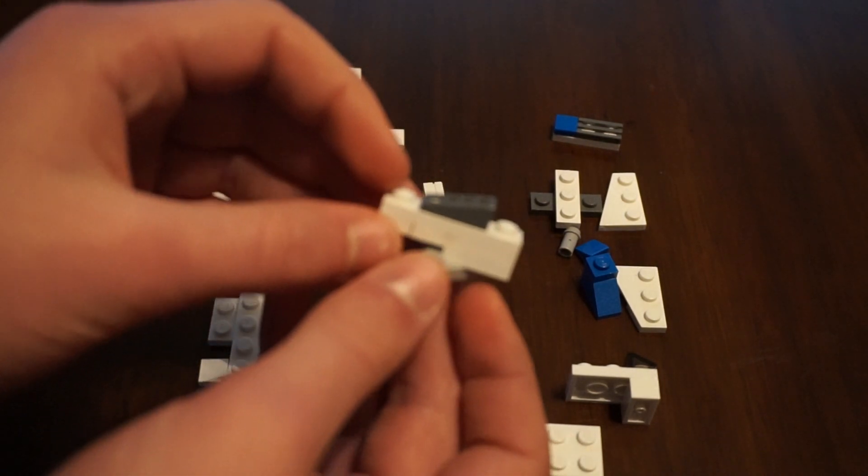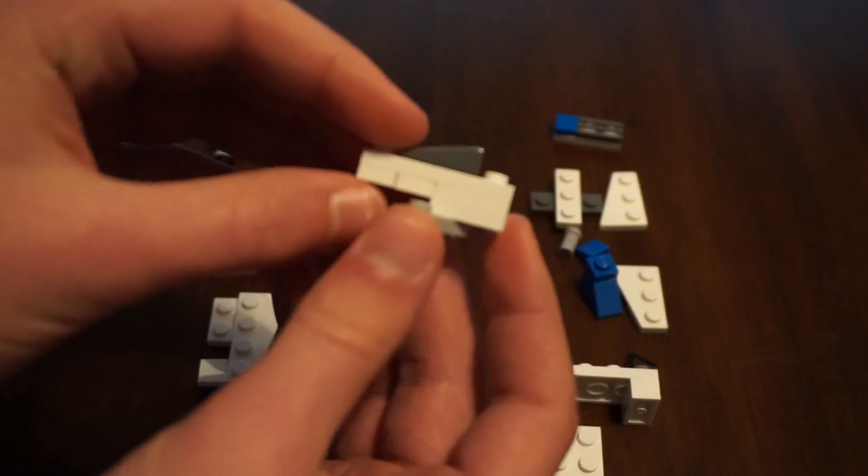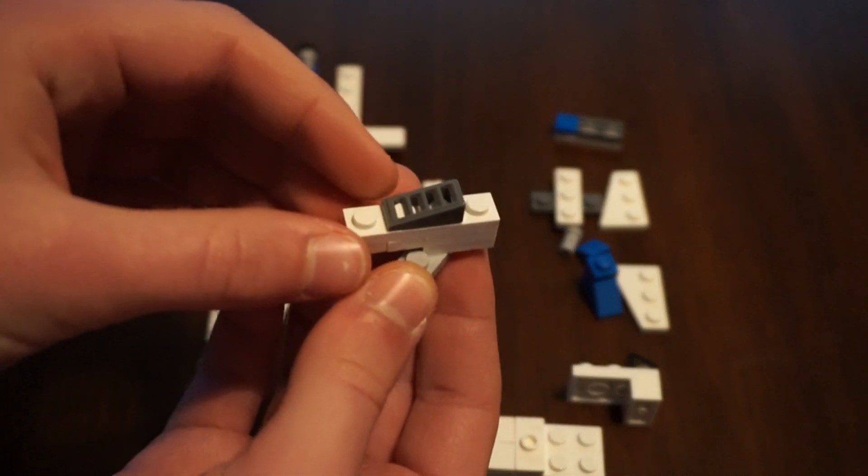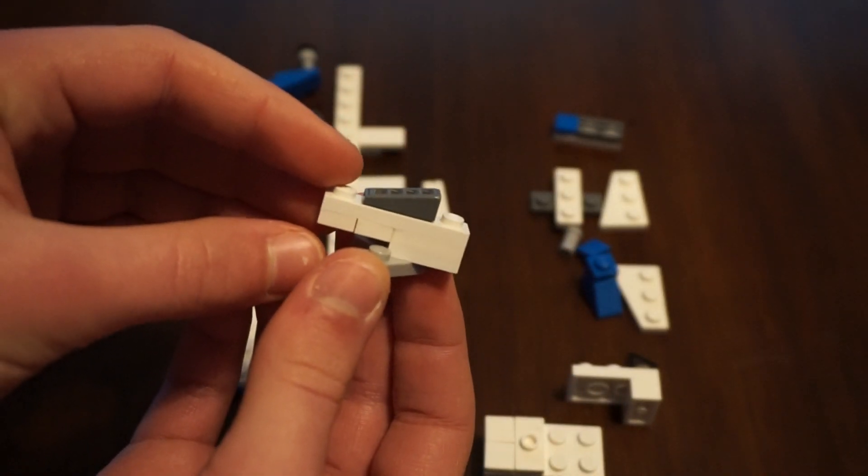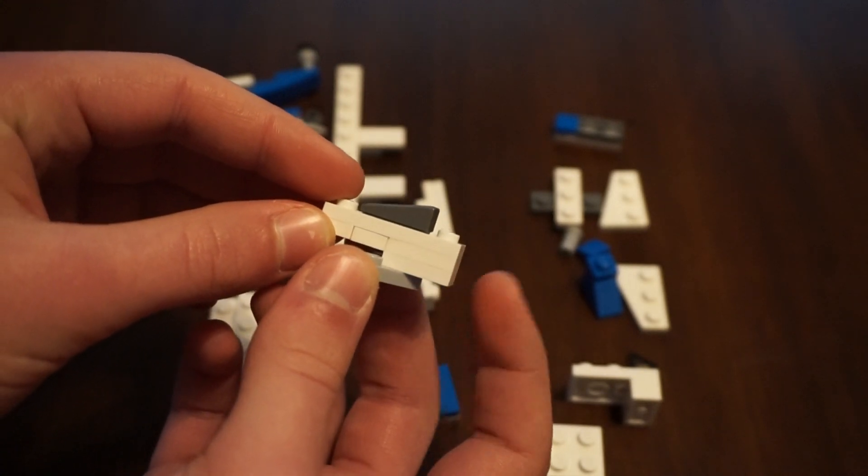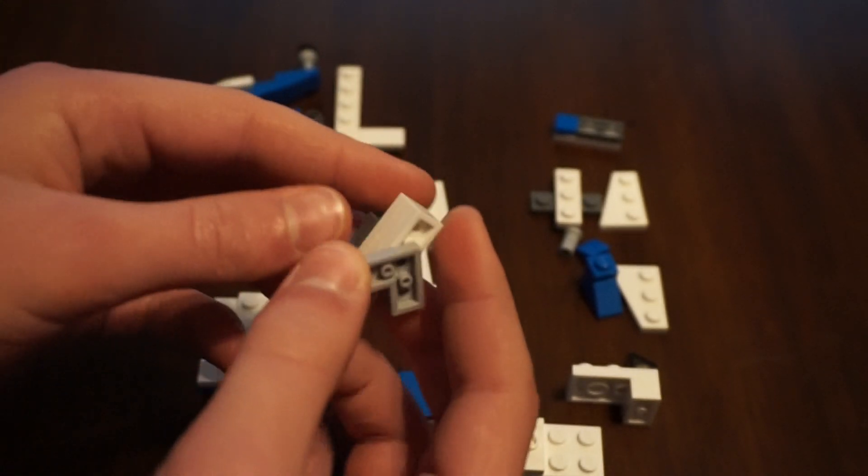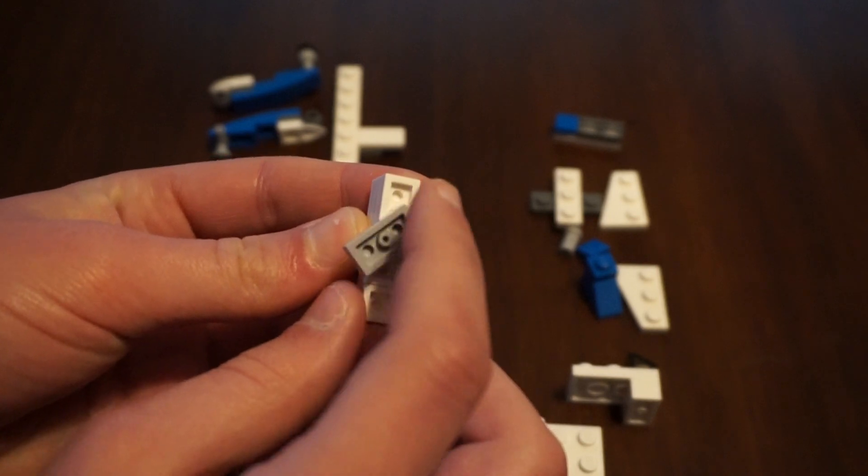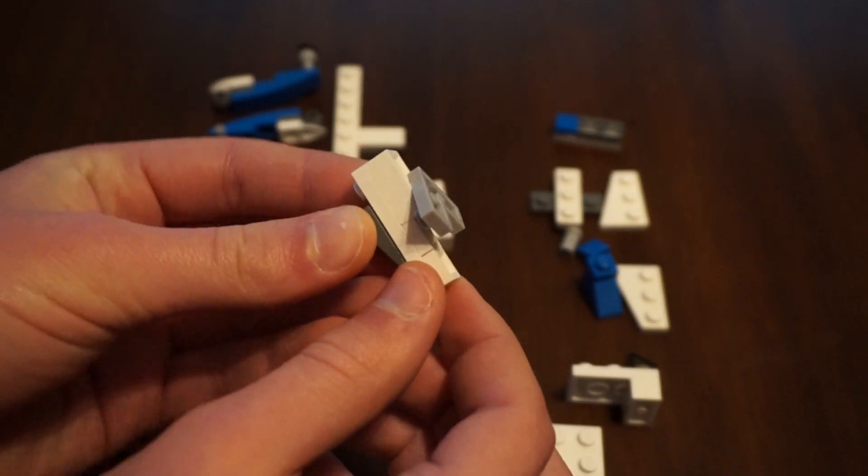We'll start off by building the fuselage by making a brick like this. You can see there, so it's three tall there and two tall there, and I have an offset and angled piece right in the center like that.